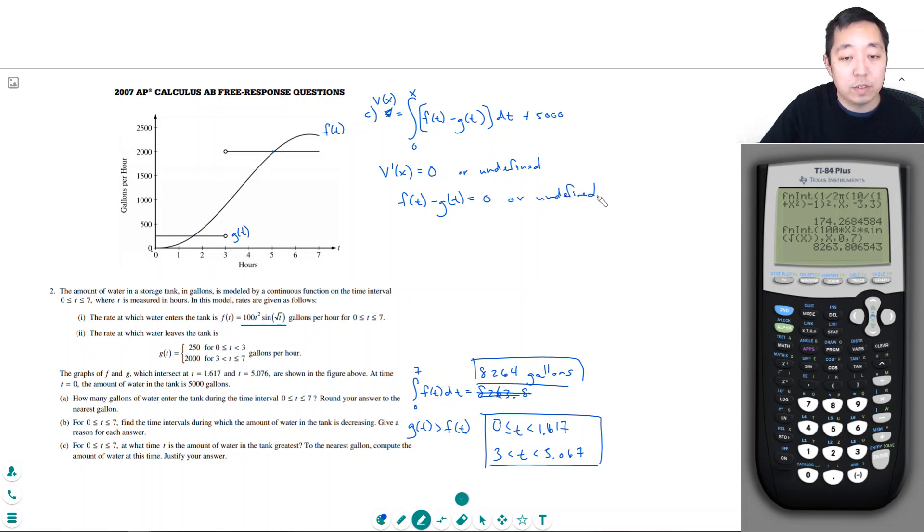But the function is defined the whole time, so there's not really an undefined, maybe this point right here, but that's not a big deal. When is it equal to 0? So we have this point and this point. So we have t is equal to 1.617 and t is equal to 5.076.